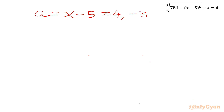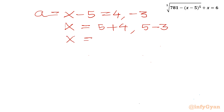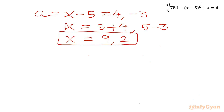Since A equals x minus 5, we add 5 to both sides. So x equals 5 plus 4 equals 9, or x equals 5 minus 3 equals 2. Therefore x equals 9 or x equals 2.